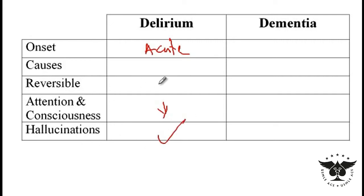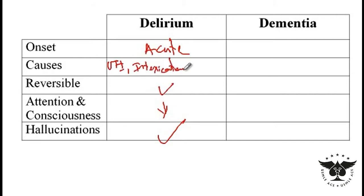The cause of delirium is usually reversible. It can be caused by infections — the most common of which is urinary tract infection in elderly — drug intoxication, drug withdrawal, trauma, fever, dehydration, or medications like benzodiazepine administration in elderly.